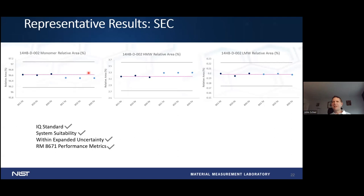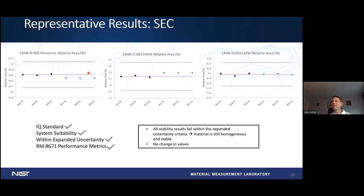We continuously monitor these samples — running our working samples as part of our normal research work — but this formal five-year stability verification is required to assure that the material maintains its homogeneity and stability and that our stakeholders are getting a stable, continuously maintained product.